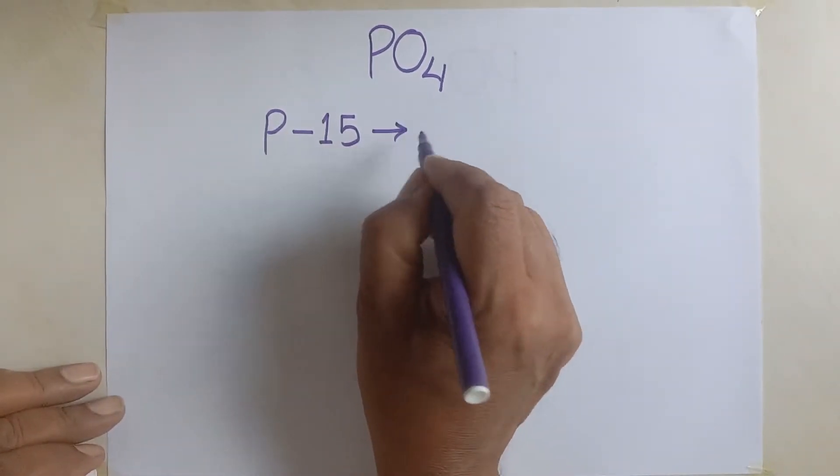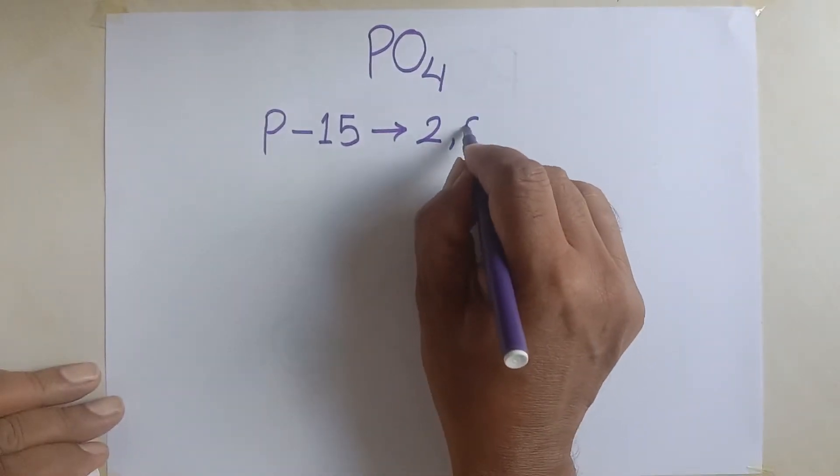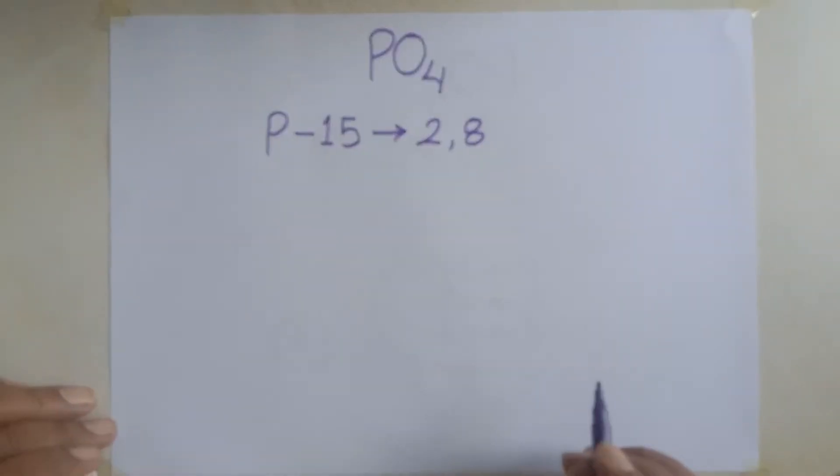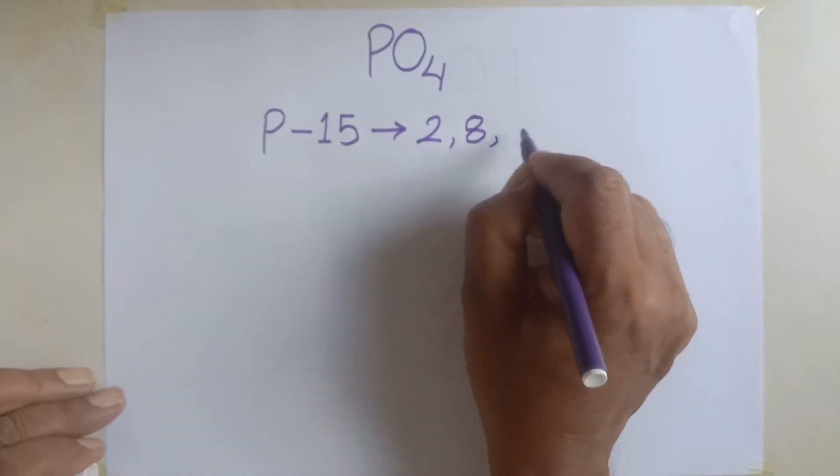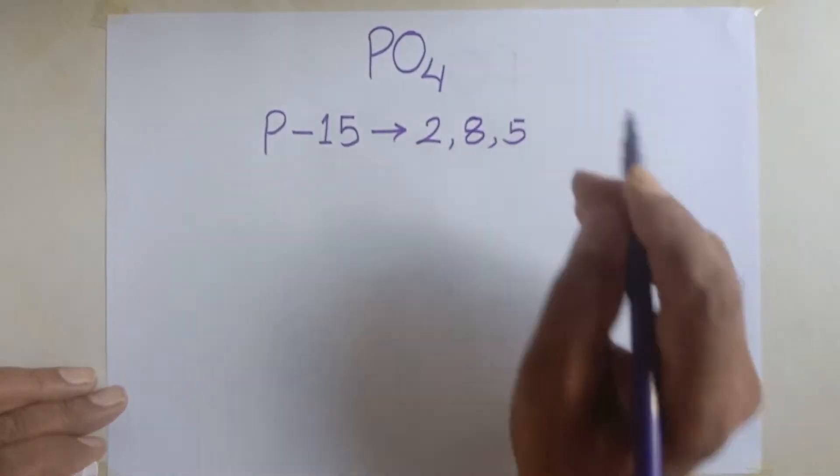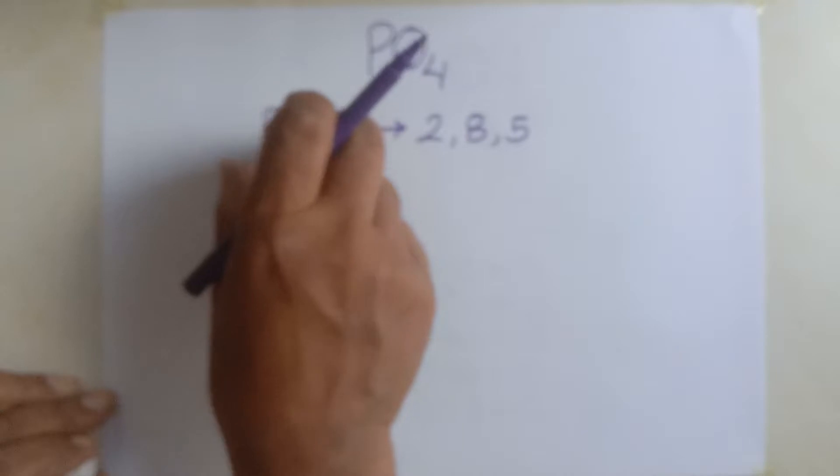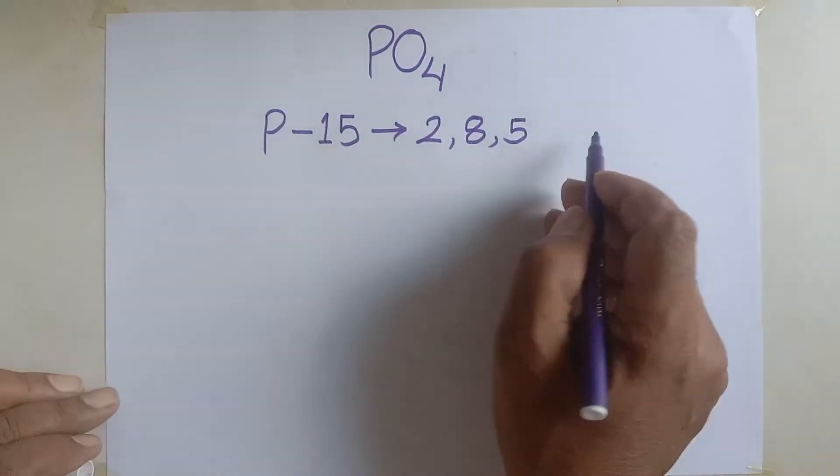In first shell, it has got two electrons. In second shell, there is eight and remaining five in outermost shell, that is third shell. This way, 15 electrons are distributed in the phosphorus.